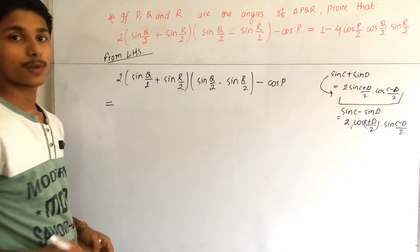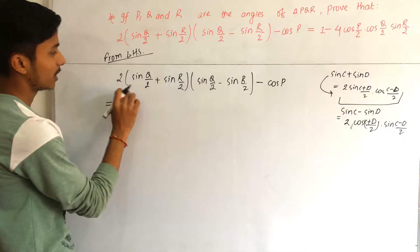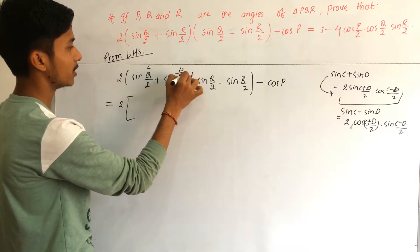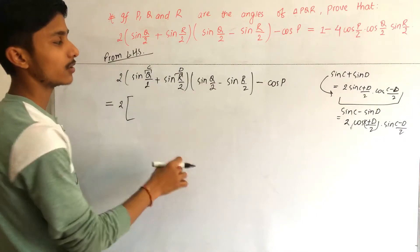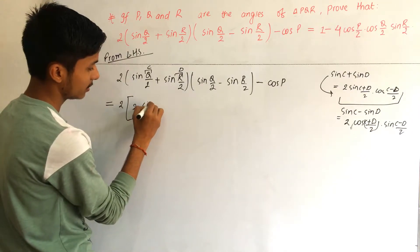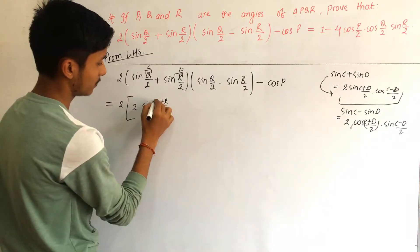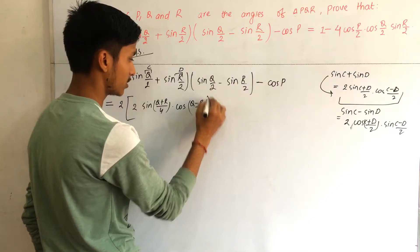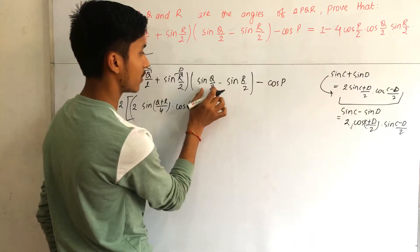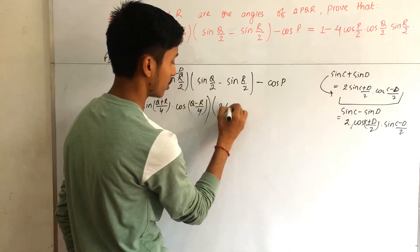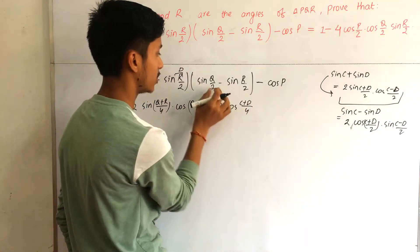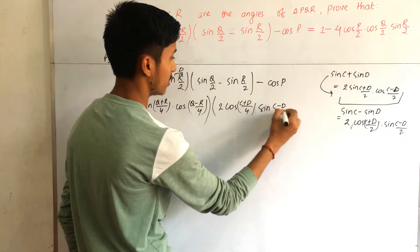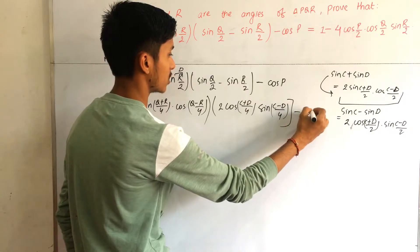Here we use the formula for sin C + sin D, considering Q/2 as C and R/2 as D. We get 2·sin((Q+R)/4)·cos((Q-R)/4). Similarly, applying sin C - sin D we get 2·cos((Q+R)/4)·sin((Q-R)/4), minus cos P.